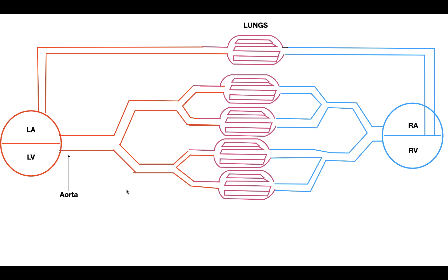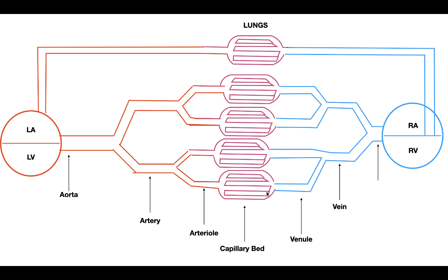Branching off the aorta are arteries, then branching off the arteries are the arterioles, and branching off the arterioles are the capillaries, which form capillary beds. The capillary beds fuse into venules, the venules fuse into veins, and the veins fuse into the inferior and superior vena cava, which empty blood into the right atrium. The key takeaway is that the capillary beds — and therefore the organs — are organized in parallel.